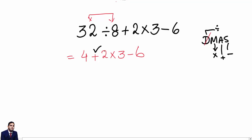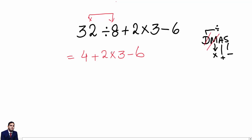After division, we have addition, multiplication, and negative sign remaining. In the formula, next is multiplication. So we multiply the two numbers 2 and 3 — 2 threes are 6 — giving us 4 plus 6 negative 6.